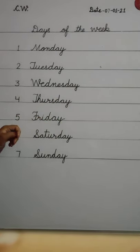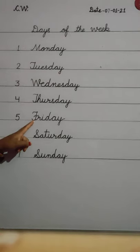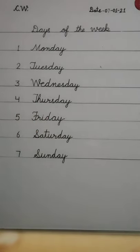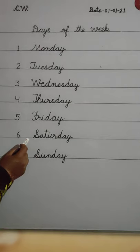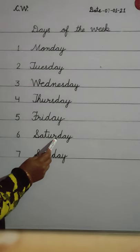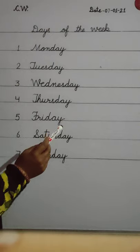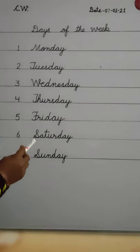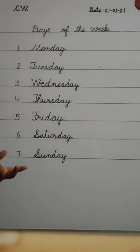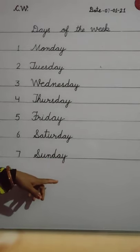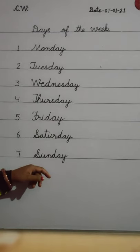Fifth day of the week: Friday. F-R-I-D-A-Y. Friday. Sixth day of the week: Saturday. S-A-T-U-R-D-A-Y. Saturday is the sixth day of the week. Seventh and last day of the week: Sunday. S-U-N-D-A-Y. Sunday is the last day of the week.